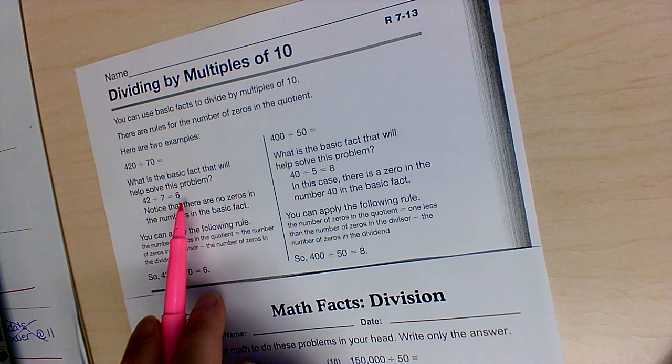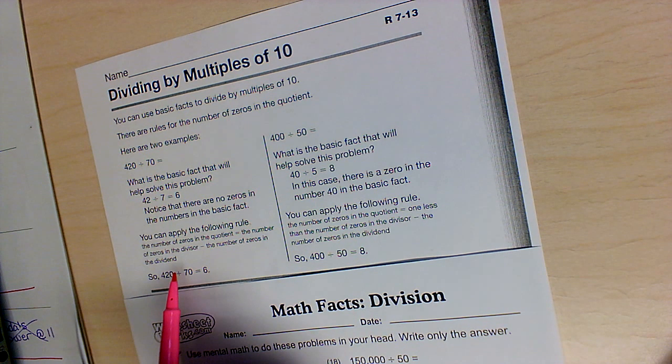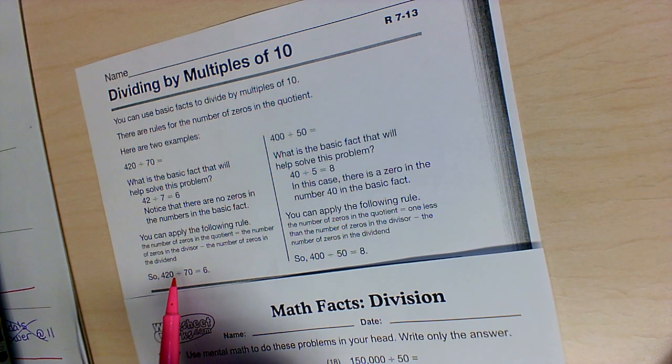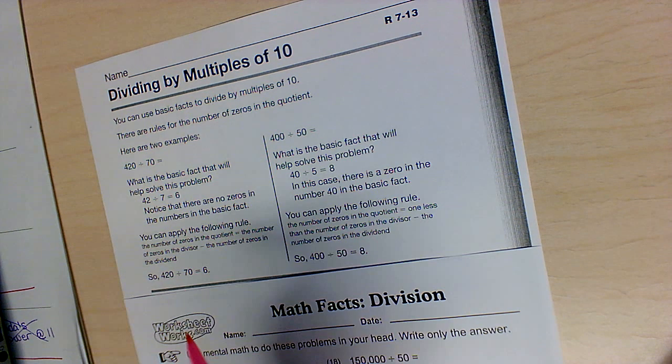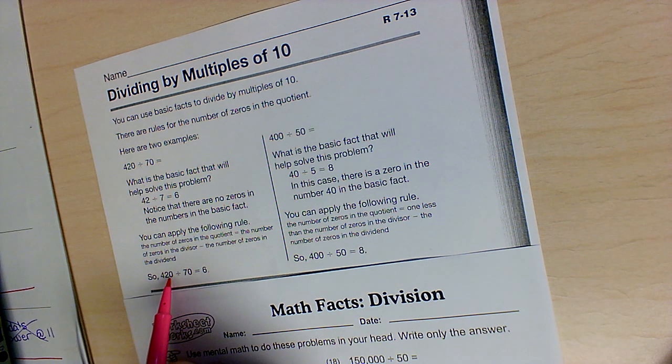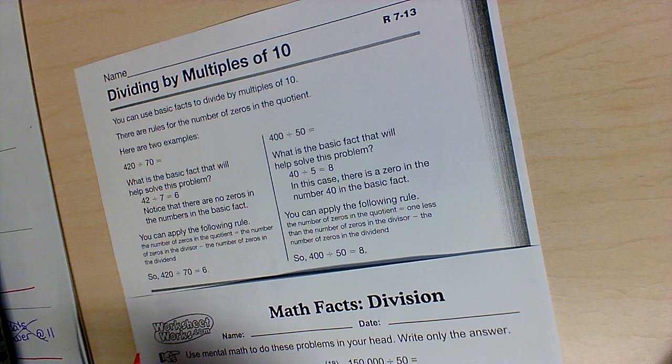So 42 divided by 7 is 6, and then the number of zeros in the quotient equals the number of zeros in the dividend minus the number of zeros in the divisor. So there's only one of each, so they cancel each other out, so our answer is just 6.